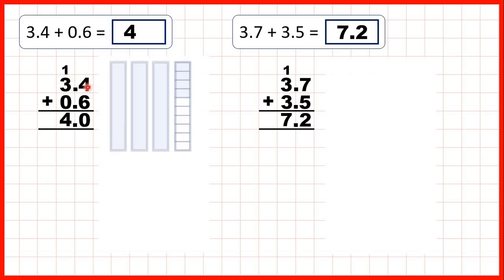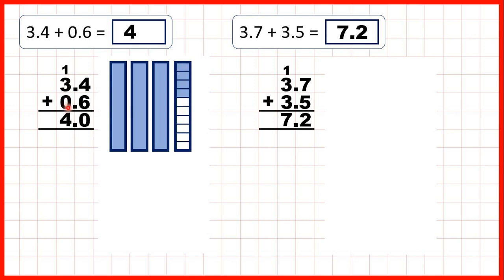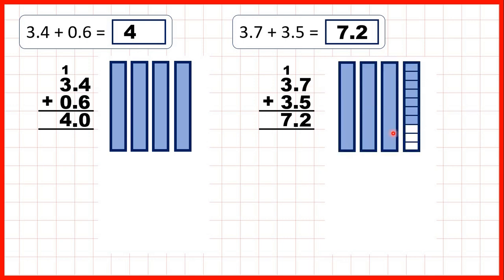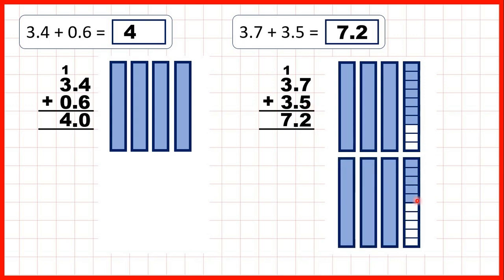We started with 3.4, so that's 3 wholes and 4 tenths, and we were adding 0.6, so that's no wholes and 6 tenths. You can see that when we put our tenths together we get 10 tenths, but 10 tenths is the same as one whole, and then we just have an empty fraction bar which we can ignore, so rather than 4.0 we can just write 4 as our answer. Then we had 3.7, so 3 wholes and 7 tenths, adding 3.5, so 3 wholes and 5 tenths. When we put our tenths together we got 12 tenths, which is one whole and 2 tenths, so we carried the one whole over to the ones column and left the 2 tenths in our answer line. Then 1 plus 3 plus 3 makes 7 wholes, and you can see that we have 7 whole bars here.